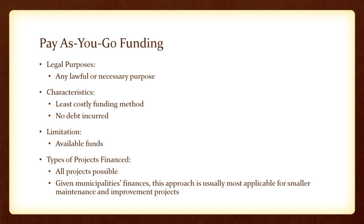General obligation bonds can be used for any lawful or necessary purpose. They are full faith and credit bonds secured by an unlimited property tax pledge, with debt service paid by levying taxes on the secondary assessed value. The city is rated double-A plus, which puts it in a good position to utilize this financing tool. The 20% rule applies to the net secondary assessed value for water, sewer, lighting, parks, open spaces, recreational purposes, public safety, and streets — and as the community grows and assessed value grows, so does that 20% capacity.